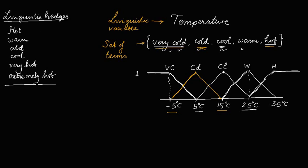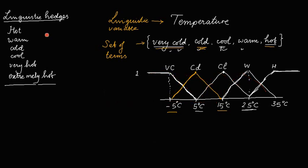We can have even more terms — like extremely cold, very very cold, mild cold, cold, cool, less warm, warm, very warm, hot, very hot, and so on. But if we increase the number of membership functions, when we ultimately go for application this results in more computation. So the more membership functions we have, the more computation is involved.